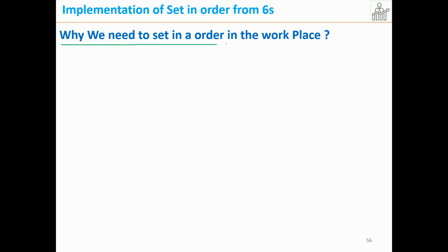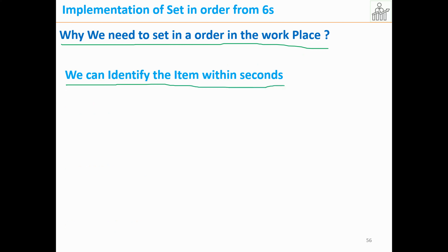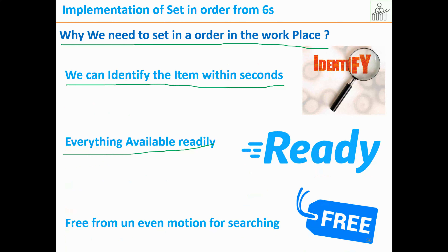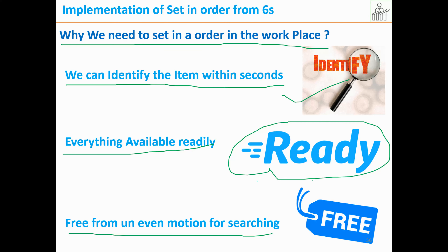Why do we need to set in order in the workplace? We can identify any item within seconds, and everything is available readily when you arrange and identify it. We are also free from uneven motion caused by searching. For example, if there were no seat number system on a train, how difficult would it be to find our seat? Similarly, when you arrange items and specify that a particular item should only be in a certain area, you know it will always be there and will not waste time searching for it.